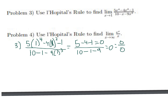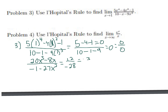With L'Hôpital's rule, we're allowed to take the derivative of the numerator and denominator individually, then try finding the limit again. The derivative of the top gives 20 − 8 = 12, and the derivative of the bottom gives 1 − 27 = −28. Wait — that's −1 − 27 = −28. So the limit is 12 / −28, which in lowest terms is −3/7. L'Hôpital's rule has allowed us to find a limit that initially looked impossible.